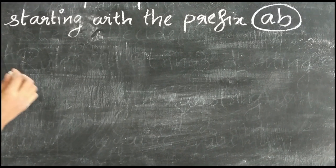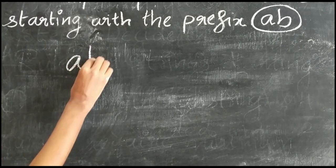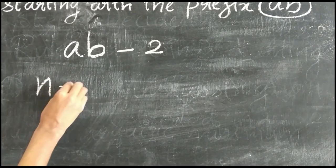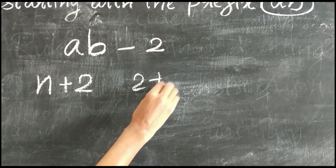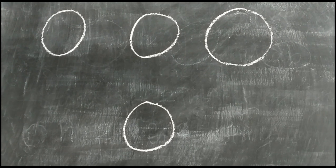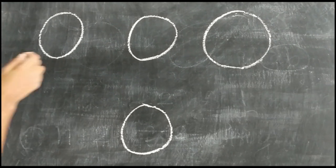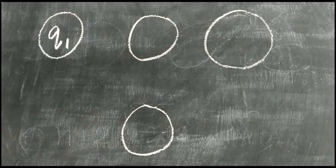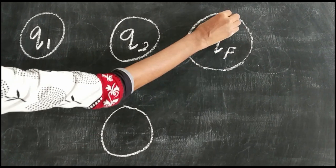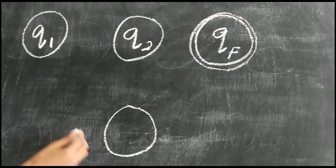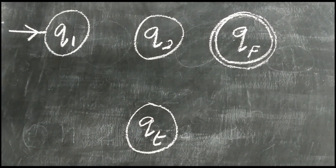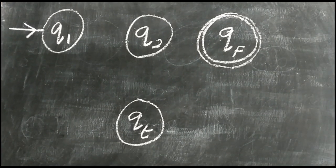In our problem we have the substring AB, so the length of the substring is 2. The minimum number of states is N plus 2, so here 2 plus 2 equals 4 states. We require minimum 4 states in this DFA. So we have 4 states: the initial state Q1, Q2, the final state QF — which we mark — and the trap state QT.